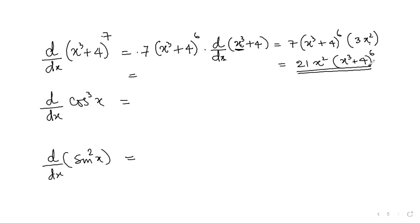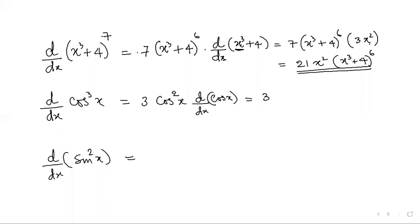Next: d/dx of cos³(x). The power is 3. Reduce by one: cos²(x). Derivative of the base cos(x) is −sin(x). So the answer is 3·cos²(x)·(−sin x).